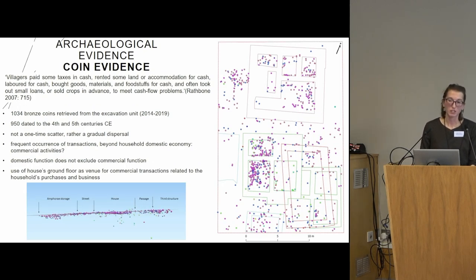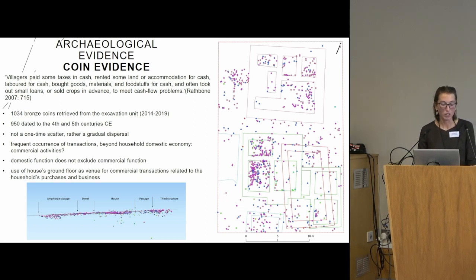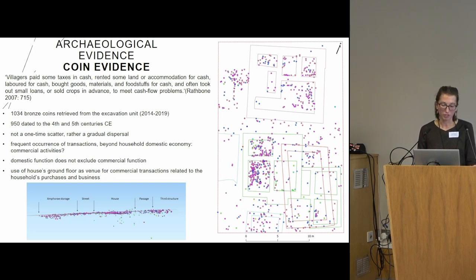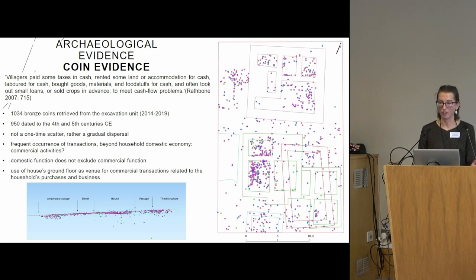Business transactions were being carried out in the premises of the house and in the area in general. Over a thousand bronze coins were retrieved from the excavation unit between 2014 and 2019. Thanks to 2D and 3D models, we could understand that it was not a one-time scatter but rather a gradual dispersal, indicating frequent occurrence of transactions beyond household domestic economy.